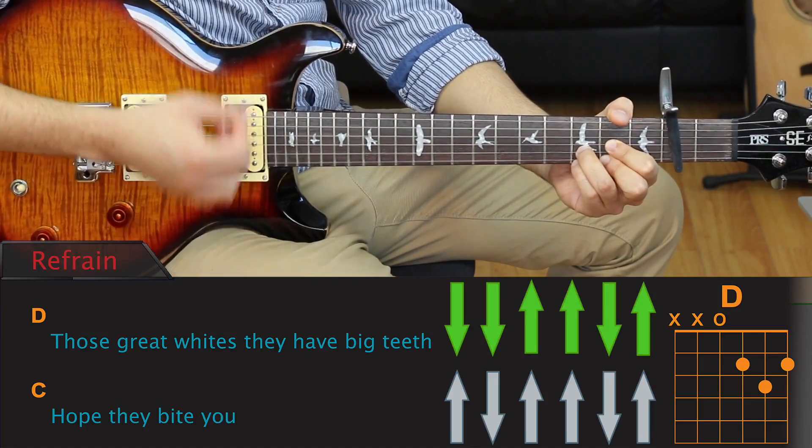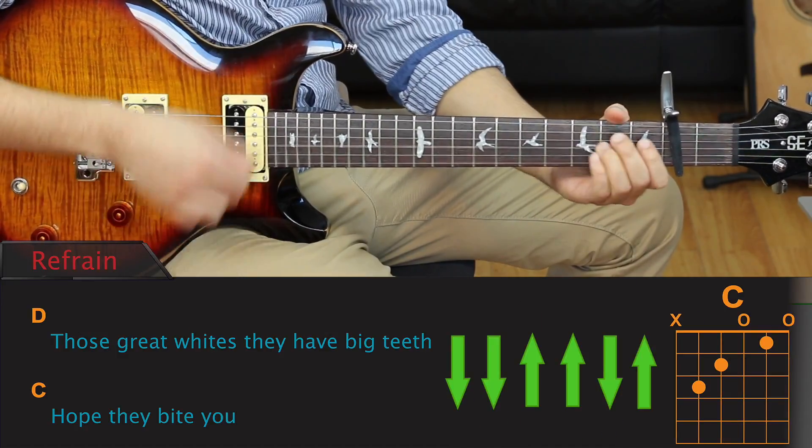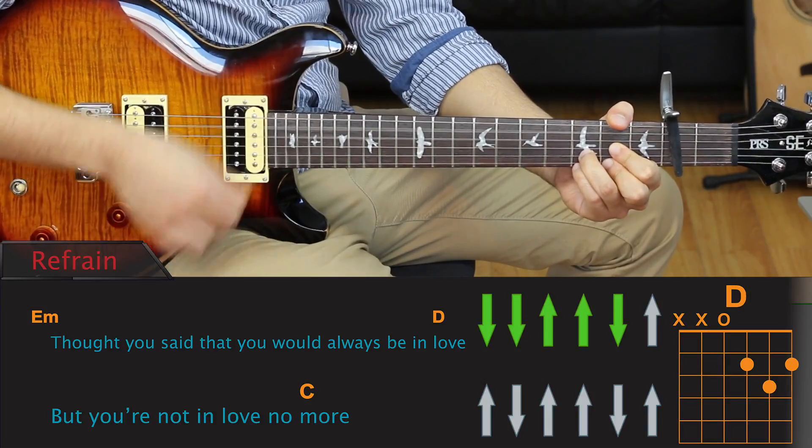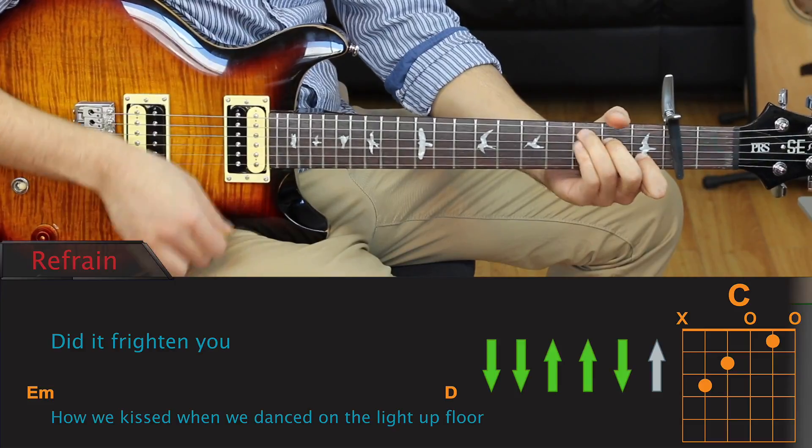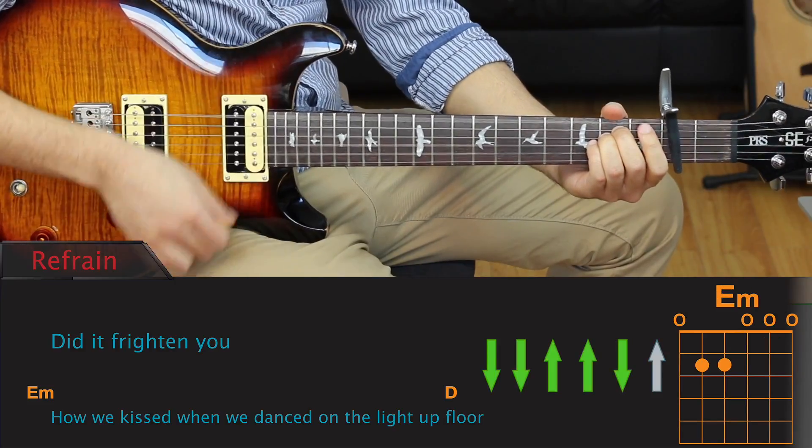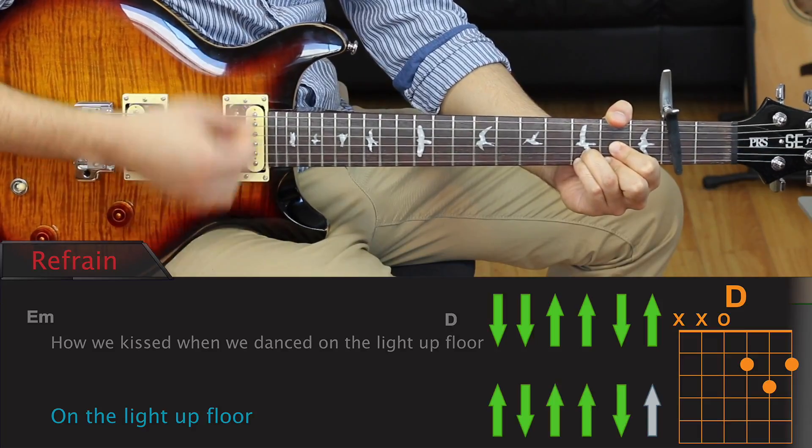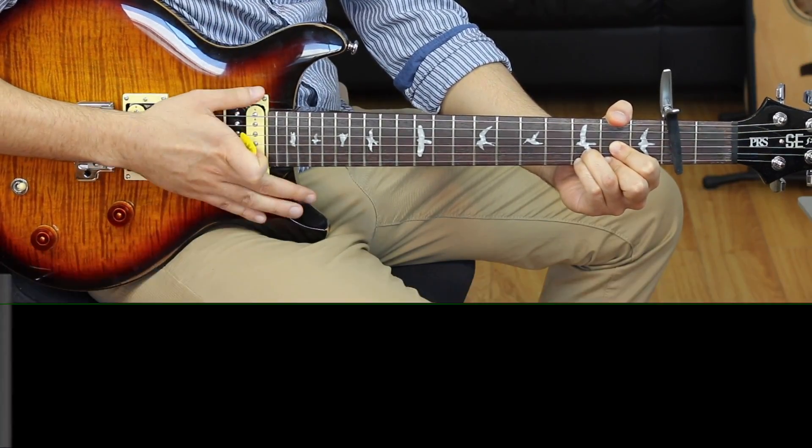Those grey whites, they have big teeth, hope they bite you. Thought you said it'd always be in love, thought you're not in love no more, didn't bite you. How we kiss me dance on the light up floor, on the light up floor. And I think that's about it.